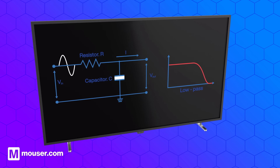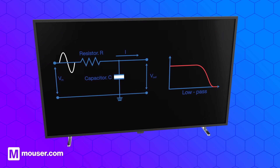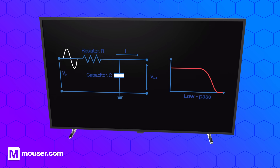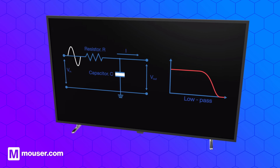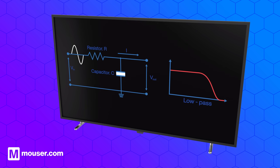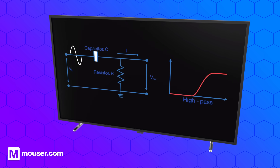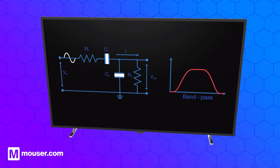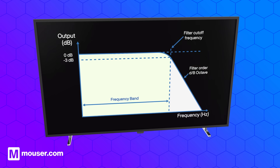An electronic filter works by using combinations of resistors, capacitors, and inductors — or digital algorithms in the case of digital filters — to create impedance that varies with frequency. For example, a low-pass filter allows low-frequency signals to pass while attenuating high frequencies. A high-pass filter does the opposite. More complex filters, like band-pass or notch filters, allow only a specific range of frequencies or block a narrow band.